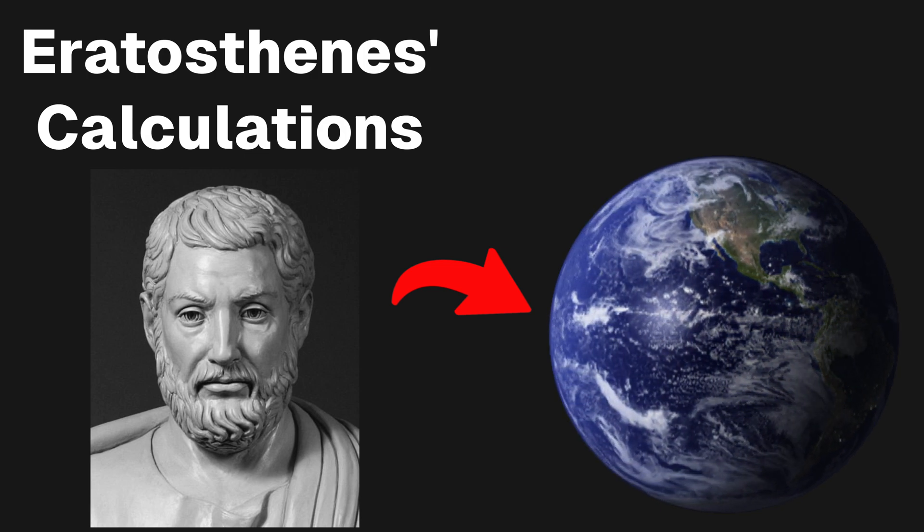using Eratosthenes' experiment simulation. I totally butchered that. This was a person that proved that the Earth was round in 500 BC.